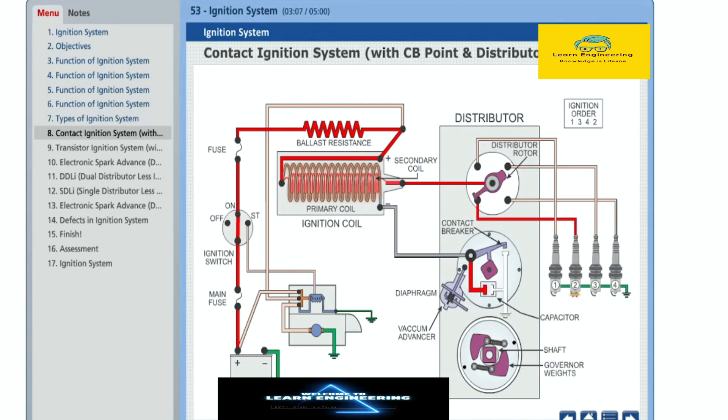Opening of contact breaker point can create a spark across the contacts and can damage them. A capacitor is used to absorb excess voltage within the circuit. It is placed in parallel to contact breaker point and voltage passes through capacitor easily than to jump across the contacts to create a spark.